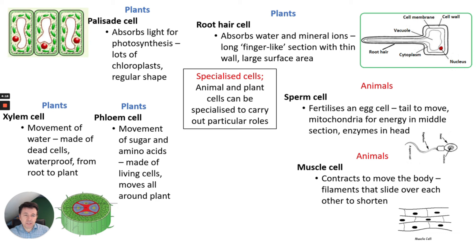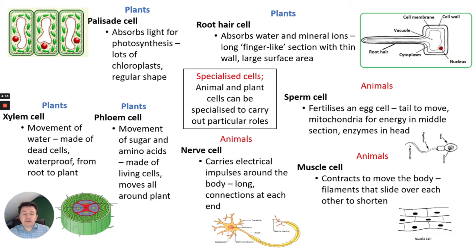The third animal cell you need to know about is nerve cells. Nerve cells are very long, very thin, and insulated because they're carrying electrical impulses around the body. They connect to each other, and later in the course you'll learn a bit more about nerve cells.